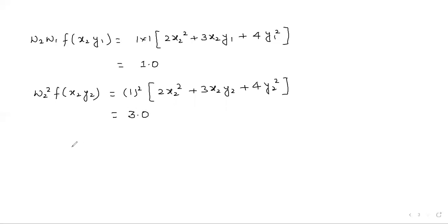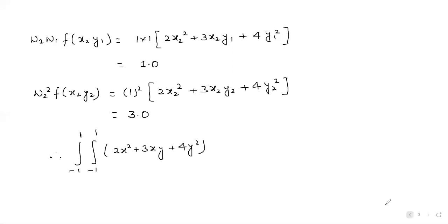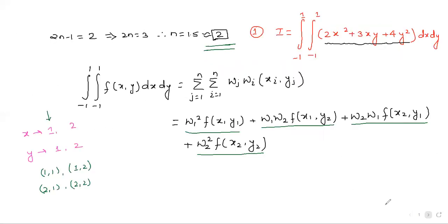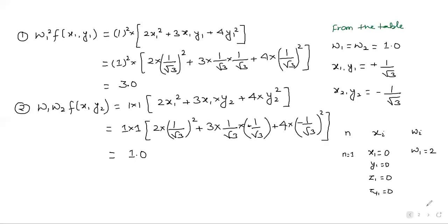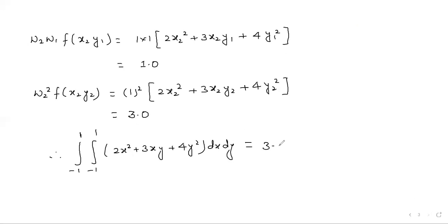So the total value is 3 + 1 + 1 + 3 = 8. Therefore, the integral from minus 1 to 1 of the integral from minus 1 to 1 of (2x² + 3xy + 4y²) dx dy equals 8.